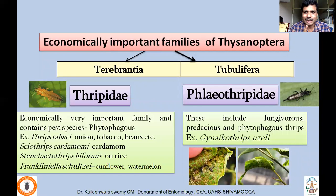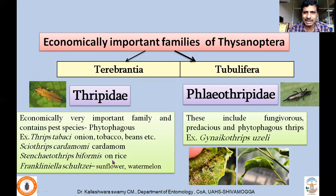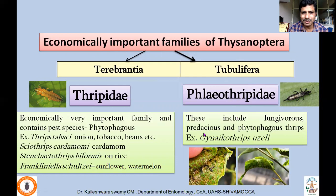Under Terebrantia, the family Thripidae contains many economically important pest species and they are phytophagous. Important species include Thrips tabaci, which attacks onion, tobacco, and beans; Sciothrips cardamomi on cardamom; Stenchaetothrips biformis on rice; and Frankliniella schultzei on sunflower and watermelon. Under Tubulifera, the family Phlaeothripidae — recognizable by the tube-like terminal abdominal segment — includes fungivorous, predaceous, and phytophagous thrips. One pest species is Gynaikothrips, which occurs on Ficus and causes characteristic leaf curling due to feeding activity.